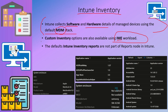Custom inventory is possible only for Windows devices at the moment, using the IME workload. If you want to know more about IME workload, you can click on the 'I' button in YouTube to get videos about IME and other Intune components. Another important thing: if you are looking for specific inventory reports in the Intune reporting or reports node, you won't find them — Intune inventory is associated with each device, so you need to go into the device record to check inventory details.